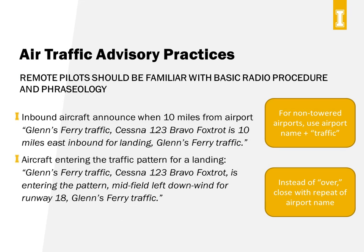The FAA expects remote UAS pilots to at least be familiar with general radio procedures and phraseology. The two questions that come up most often on the Part 107 test relate to when aircraft should radio in for non-towered airports and how they announce they're beginning an approach for landing. Aircraft typically should radio in when they're 10 miles out from the airport and announce their position and intention — something like: 'Glens Ferry traffic, Cessna 123 Bravo Foxtrot is 10 miles east inbound for landing, Glens Ferry traffic.' Note this is the same pattern: who you're calling, who you are, where you are, and what you want.